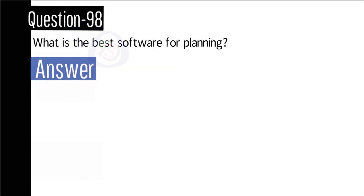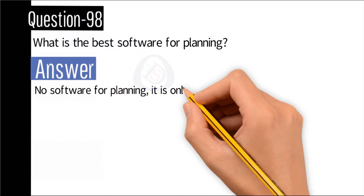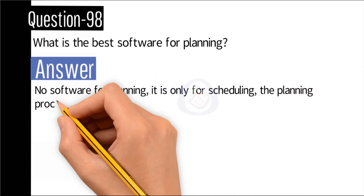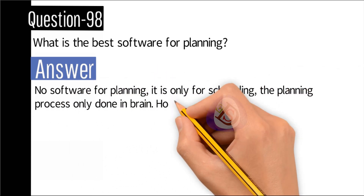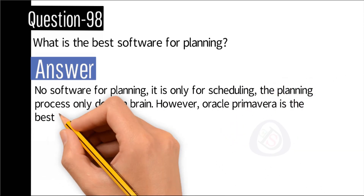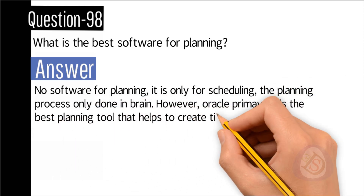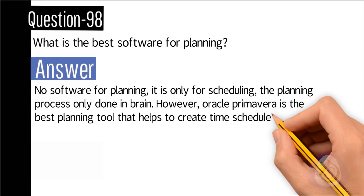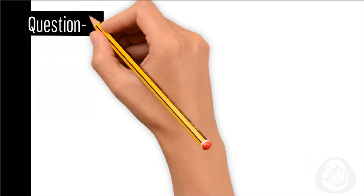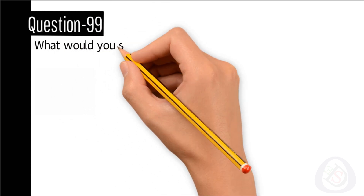Question number 98: What is the best software for planning? Answer: No software is for planning — it is only for scheduling. The planning process is done in the brain. However, Oracle Primavera is the best planning tool that helps to create a time schedule.